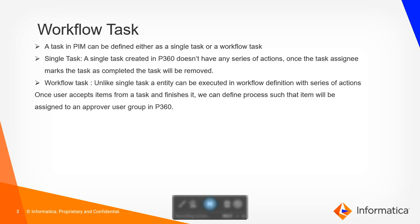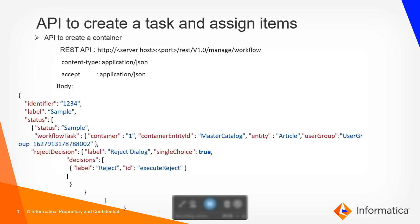For example, a user can accept an item in a task, work on the item, and send it for approval to the approval user groups. The approver users, based on the data, can either approve or reject it. Based on the approve or reject decision, the item will flow to the subsequent actions. So let's see how we can create a workflow task inside P360.